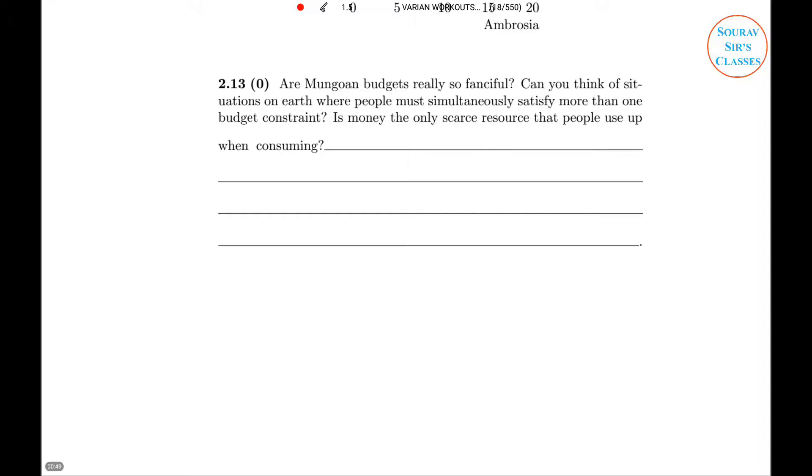Our Month One Budget, Number One Budget, we have done a tutorial based on this where there were red income and blue income, where two constraints had to be satisfied simultaneously. If you want to check that tutorial, you can visit our website. Those budgets were very fancy looking. So the question is: Can you think of a situation on earth where people must simultaneously satisfy more than one budget constraint?